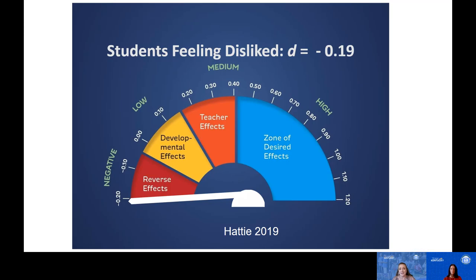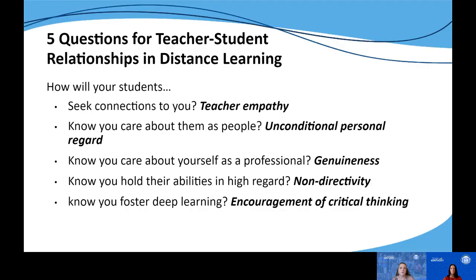The unfortunate flip side is illustrated in John Hattie's meta-analyses: when students do not feel liked by their teacher, the result becomes a negative effect size, meaning student achievement is negatively impacted and student learning is stifled. So how can we as educators be mindful of building those positive student-teacher relationships? The text points to five characteristics to consider in distance learning: teacher empathy, unconditional personal regard, genuineness, non-directivity, and encouraging critical thinking.